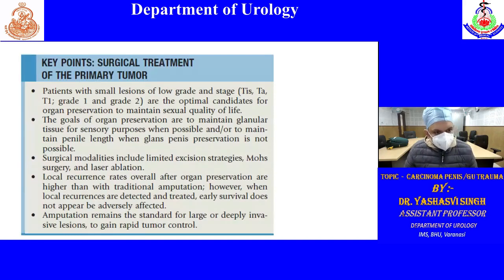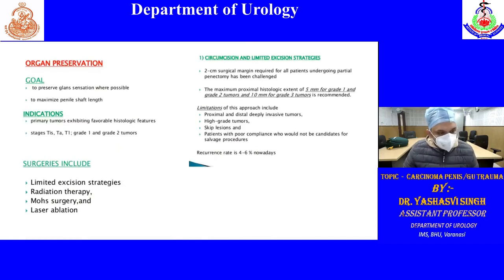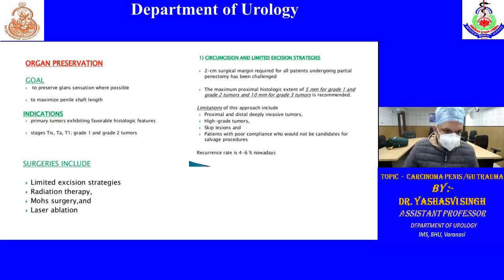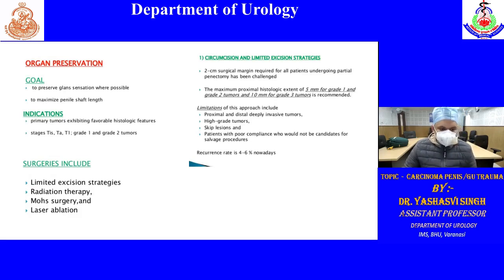Key surgical principles: preserve glans sensation whenever possible, but oncological principles should not be compromised. Organ preservation is possible for TIS, Ta, T1 grade 1 and 2. Options include limited excisional strategies, radiation, Mohs micrographic surgery, and laser ablation.